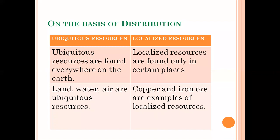We also divided natural resources on the basis of distribution. On the basis of distribution, resources are classified as ubiquitous resources and localized resources. Ubiquitous resources are those resources which are found everywhere on the earth — for example, air, water, and land. Whether we are in Antarctica, India, or Russia, air is everywhere and water is available in different forms.